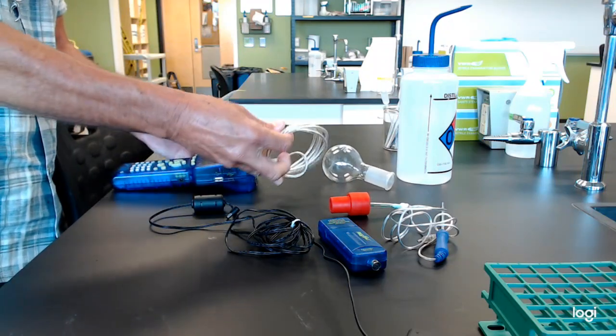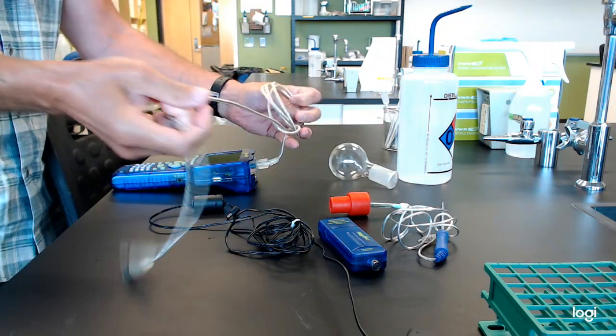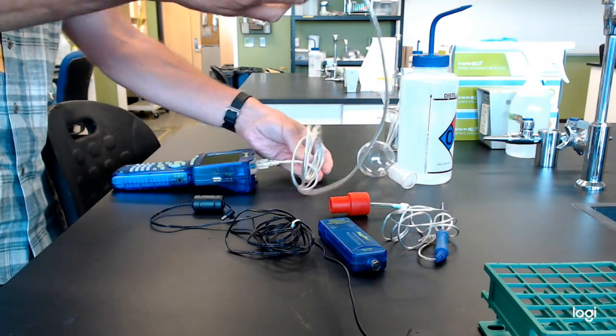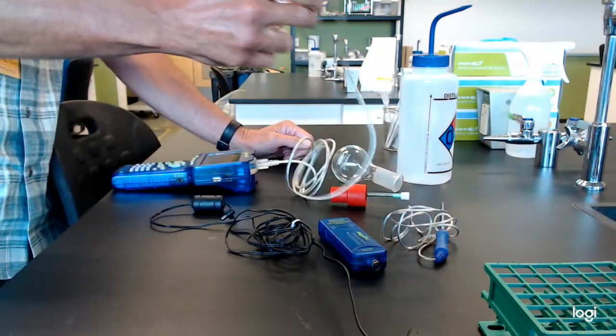One feature of this is it does have an extension cord, and that's all this is, is an extension cord for all the different sensors. You can use it if needed. For the vapor pressure lab, you will need the extra cord.